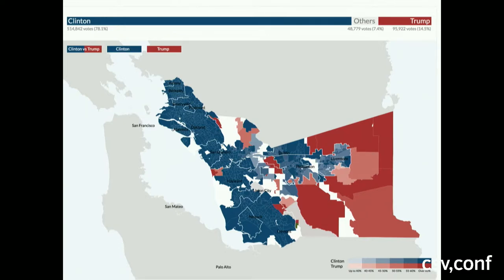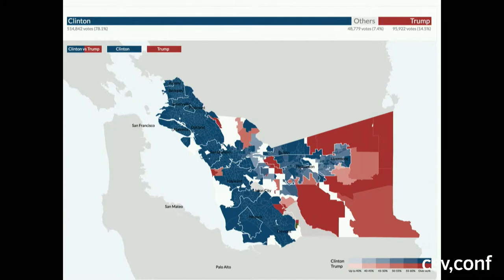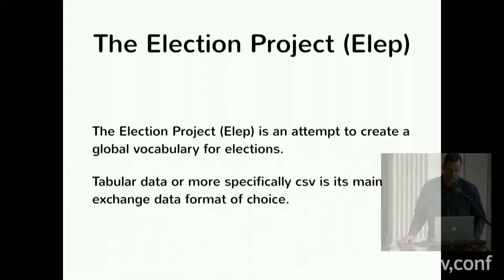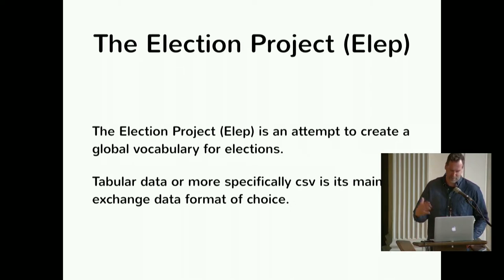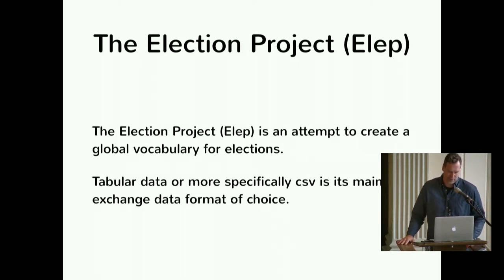The red part is for Donald Trump. And the problem was, while we were working on this, we encountered many, many problems because there is so much variety. And so, more and more, we went to the point where we said, well, this is kind of a big thing, much bigger than we thought at the beginning. We just wanted to map some data. And so we call this now the election project, or the LEP.